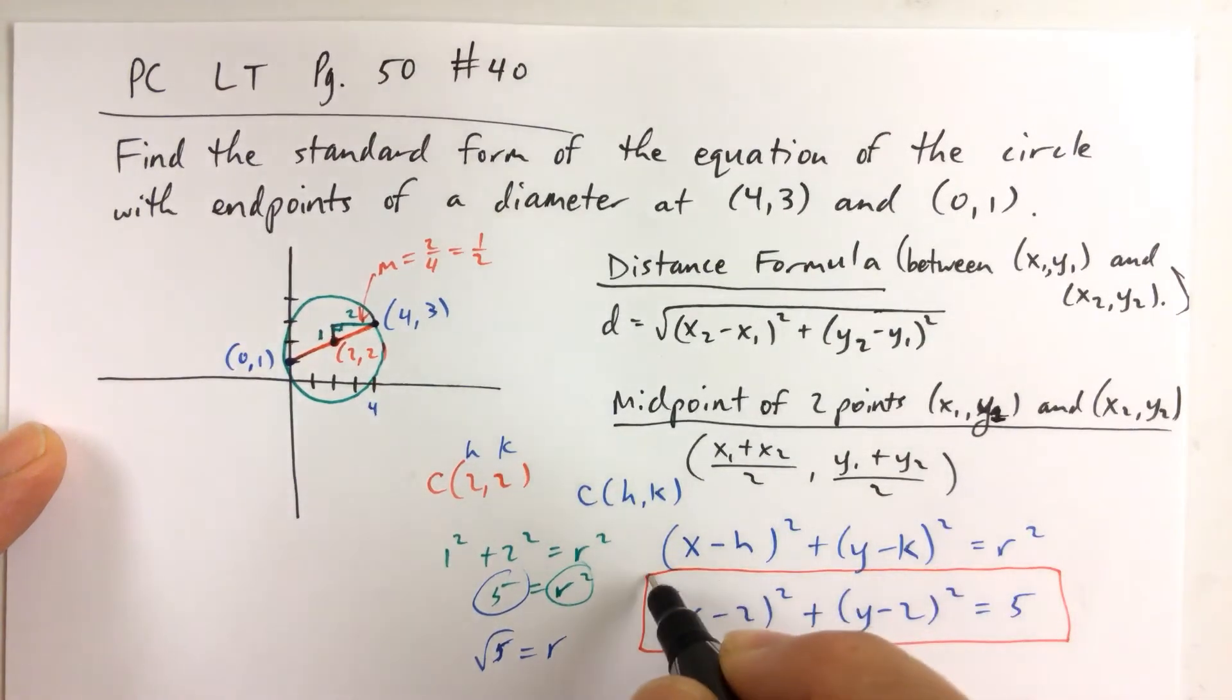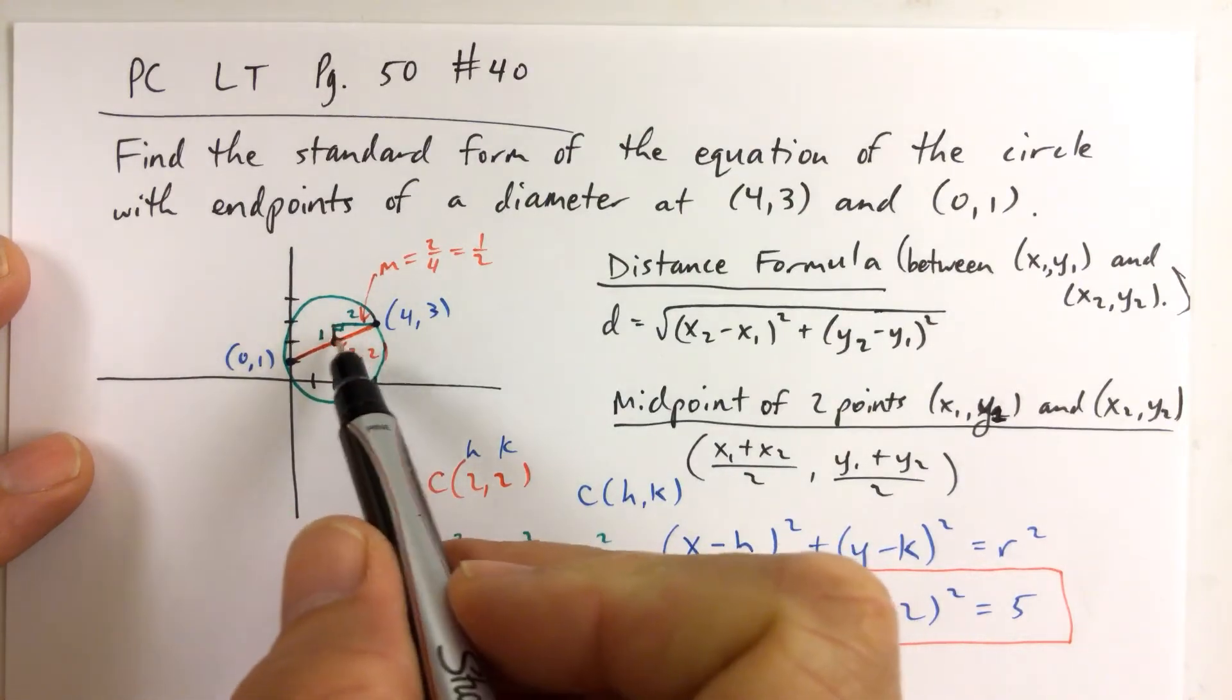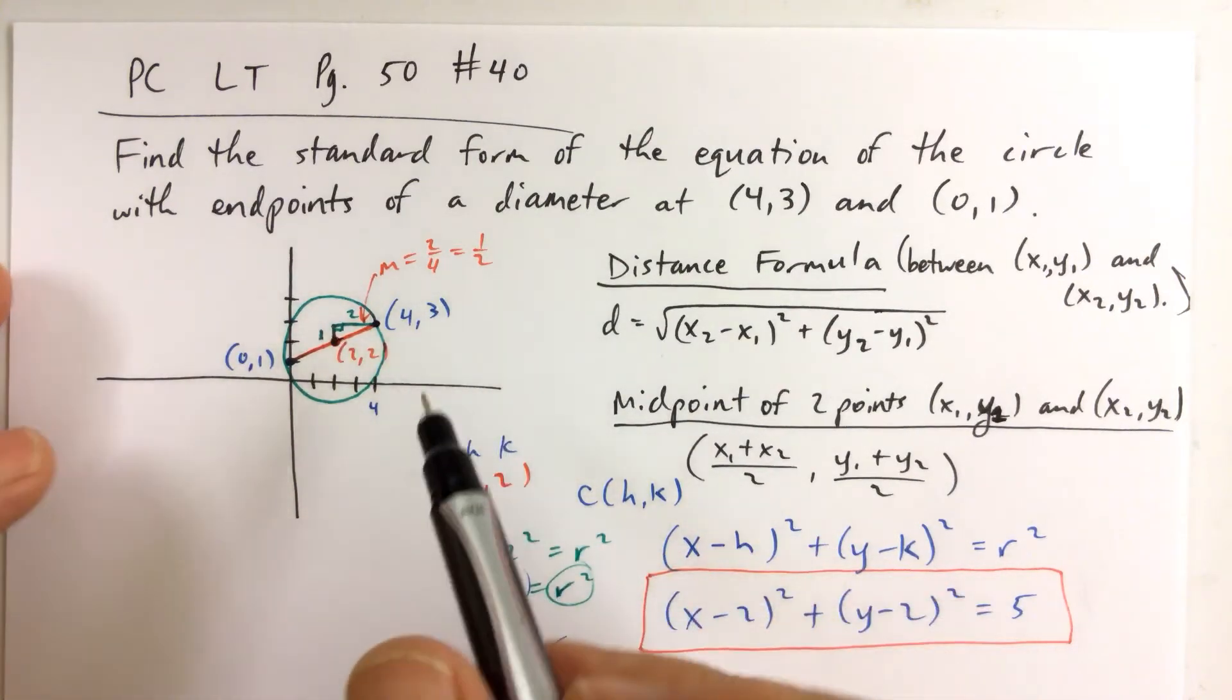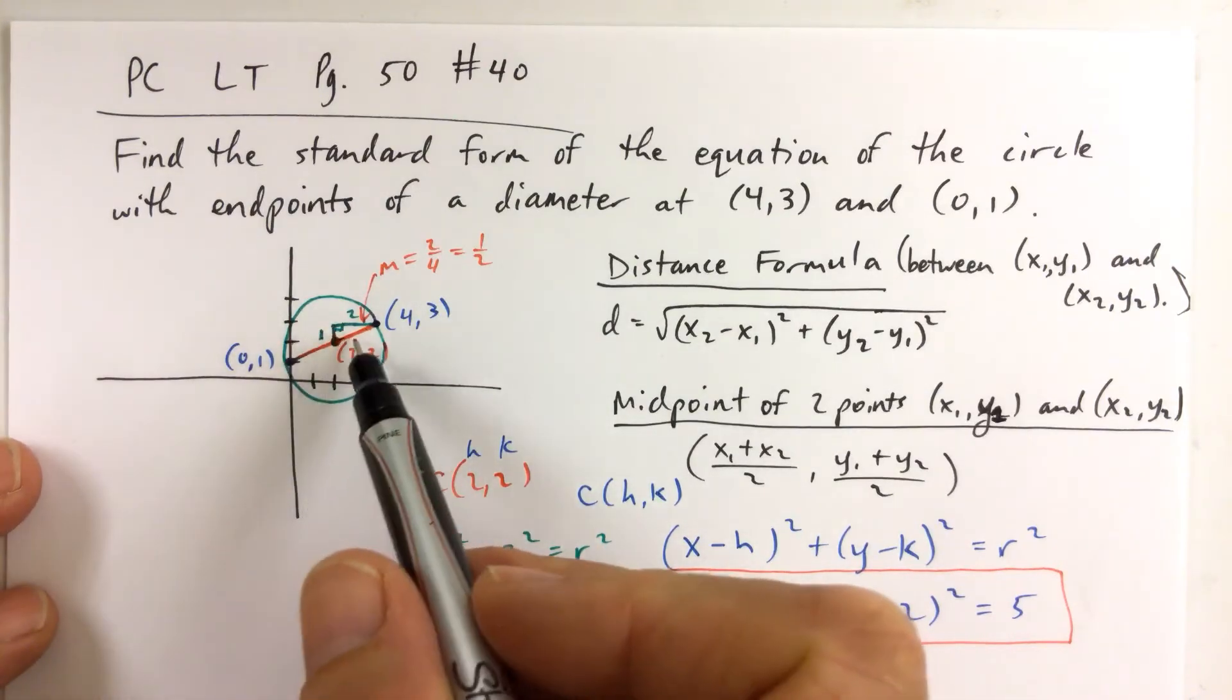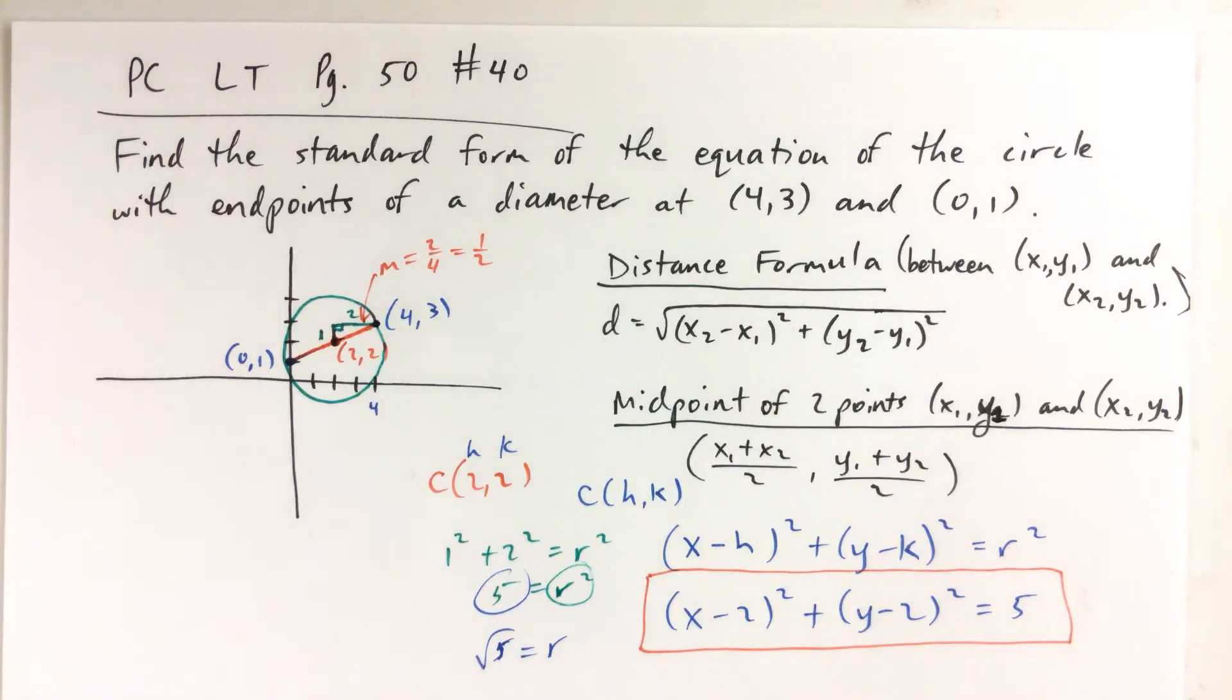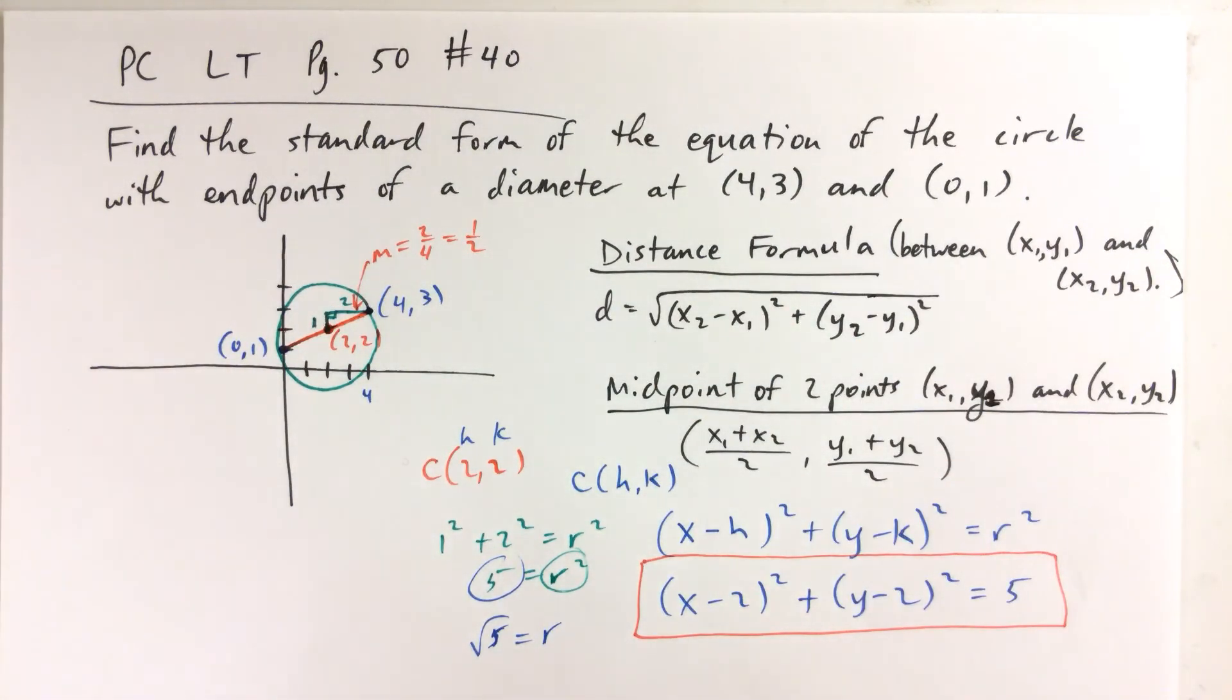Now, if by chance you don't recognize this part here - you don't count up 1 and over 2, or maybe the numbers don't give you some easy integers for the center of the circle - I'll show you how to use the formulas in the next video because this video is already almost 5 minutes long.